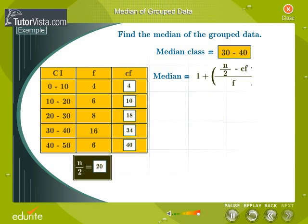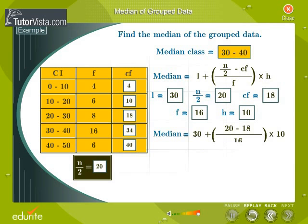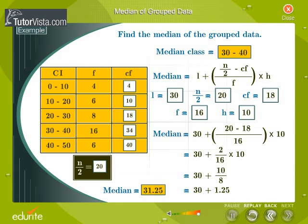We now apply the formula for finding the median. Key in the values for L, N by 2, CF, F, and H. Median is equal to 31.25.